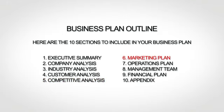The sixth section is your marketing plan, where you lay out your marketing strategy. The seventh section is your operations plan, where you explain how you actually run or will run your business. The eighth section, the management team, is where you provide bios of your team. The ninth section is your financial plan, where you give financial forecasts. And finally, the tenth and last section is your appendix, where you provide any additional supporting information.